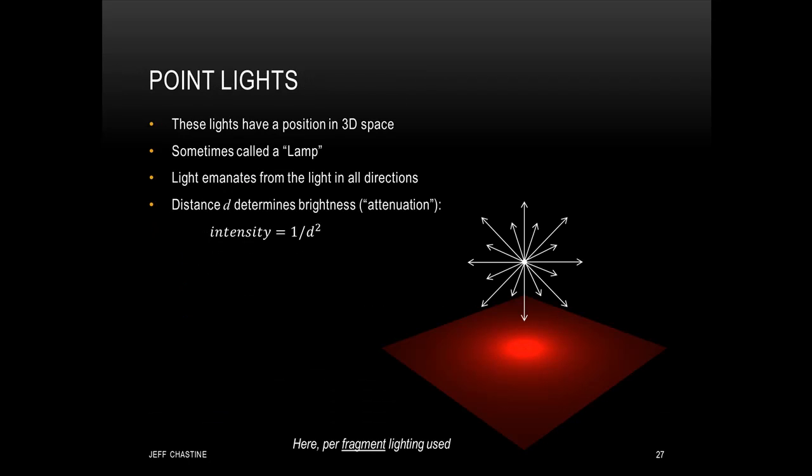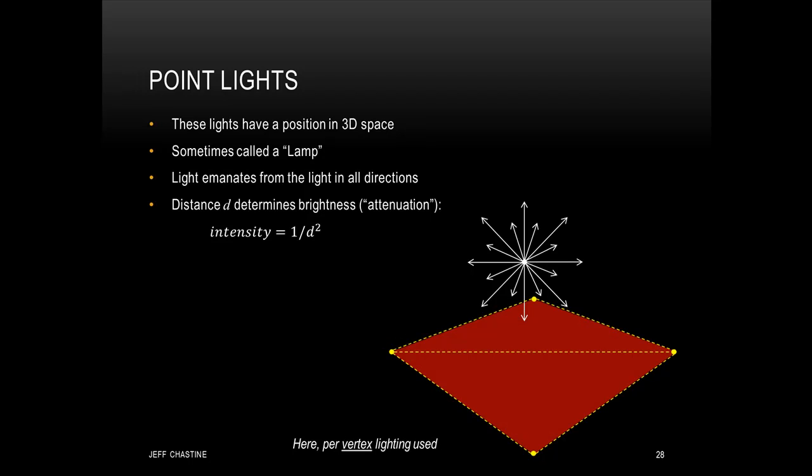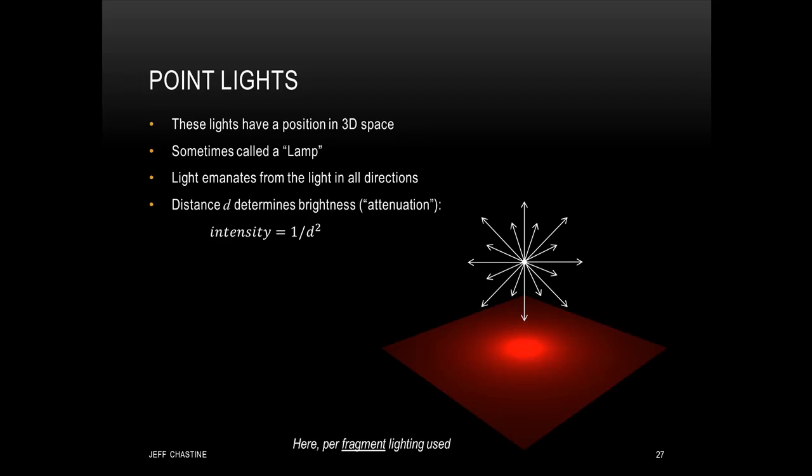The first light that we'll look at is called a point light, and these lights have a position in 3D space. Because of its behavior, sometimes people call point lights a lamp, and with a point light, light is going to emanate from that 3D position and go out in all directions. Now because this is a point light and it behaves like a lamp, the distance is going to determine the intensity of that lighting. Now most commonly, intensity is calculated as 1 over the distance squared. So you can see in the example on the right that the middle of the square is brighter than the other regions because it's closer to the light source. You should also note that in this example we've used per fragment lighting. And what that means is that each red pixel that you see here was calculated using a lighting equation. Instead what we could have done is to use per vertex lighting. And in this case what would happen is that we would light each vertex and then calculate the in-between colors using interpolation. So you can see that compared to per fragment lighting, we're losing a lot of that lighting information.